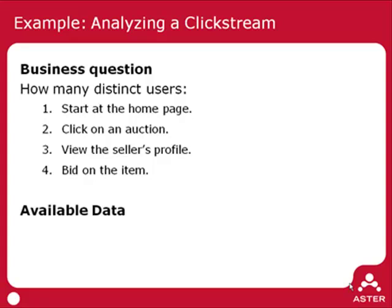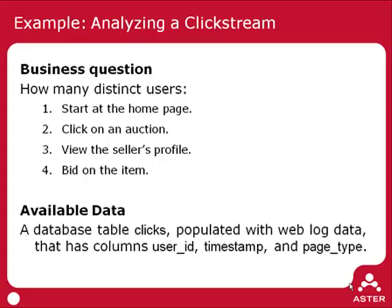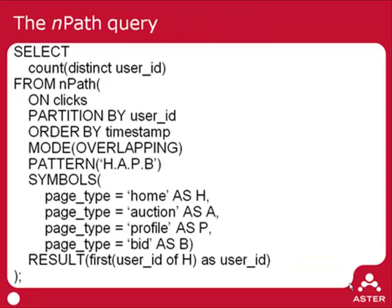The available data is a database table called clicks, populated with weblog data that has three columns: user ID, timestamp, and page type. So it's the simplest possible clickstream. Here's the nPath query that we'd issue to answer that business question, and let's step through this query one by one to talk about how nPath works.